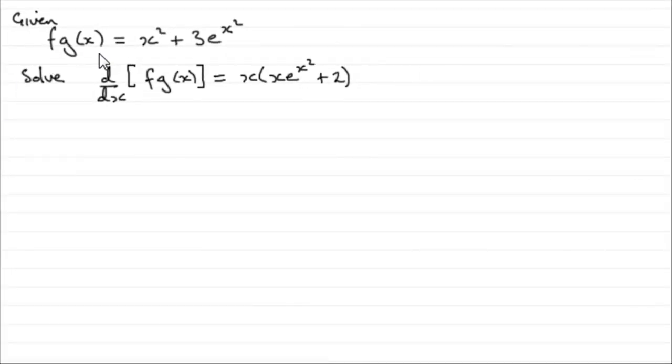Now we're given that fg of x is equal to x squared plus 3e to the power x squared, and we're asked to solve this equation. The differential with respect to x of fg of x equals x times all of x e to the x squared plus 2.